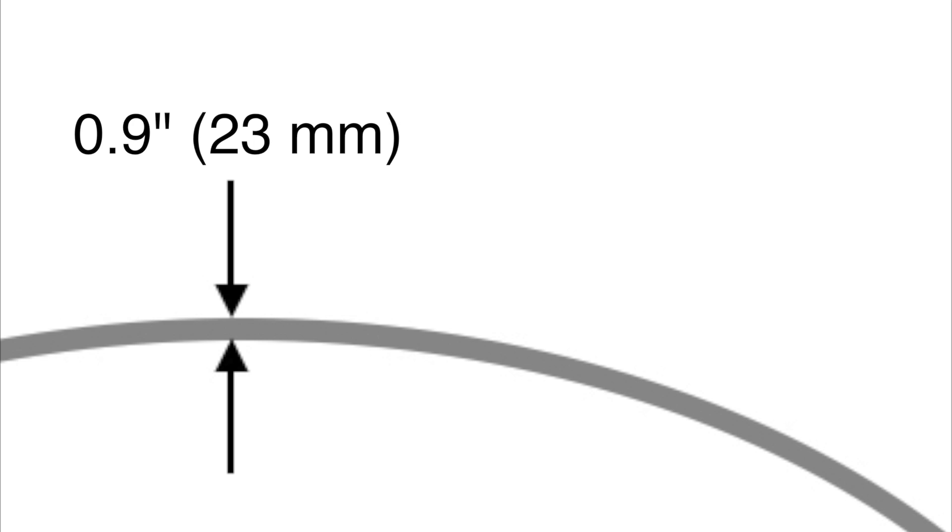Elon Musk proposed a steel wall thickness of just under an inch. It turns out this thickness would be enough to prevent implosion.